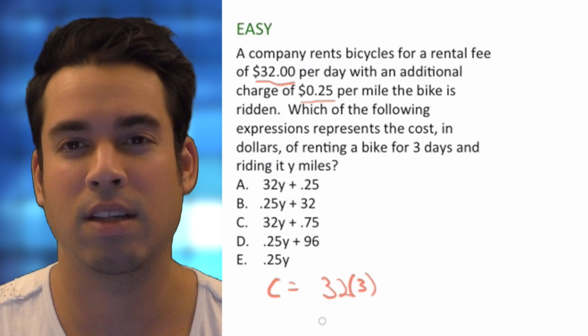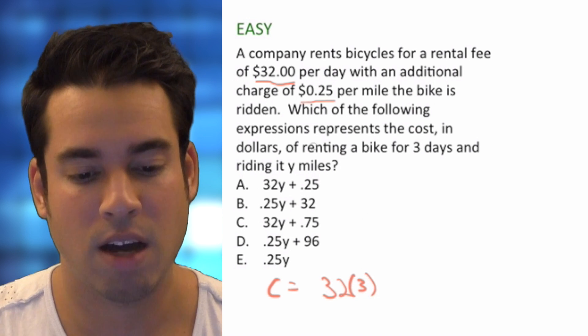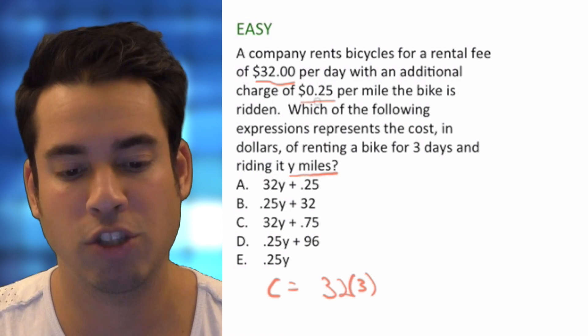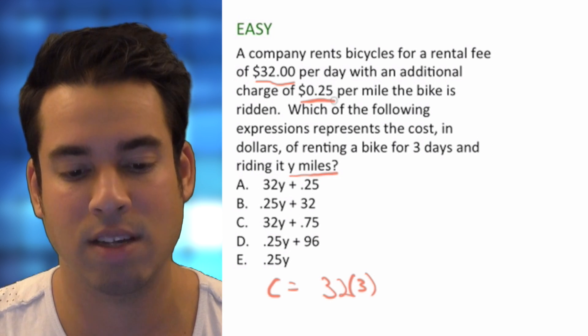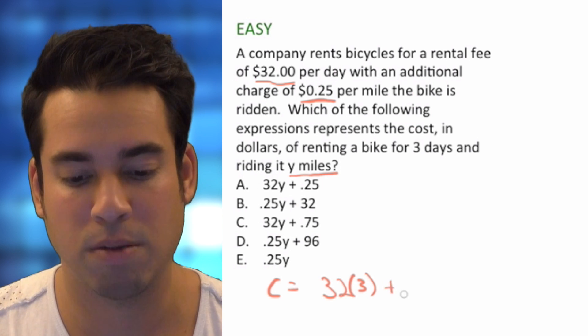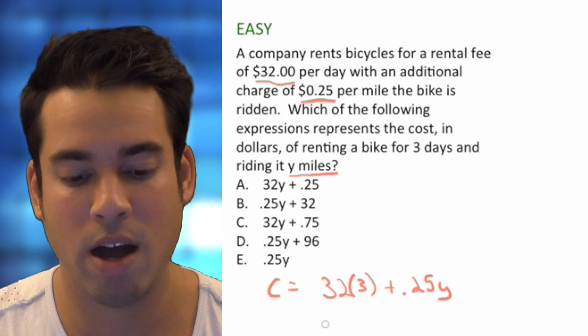All right, that will be the daily rental rate. And then we've got Y miles representing it. We don't know how many miles, but how much is it per mile? It's 25 cents per mile. So we're adding that on top. So that would be 0.25 times Y.